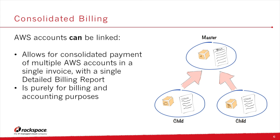RDS Reserved DB Instances function similarly to EC2 RIs and are worth leveraging. AWS credits placed on linked child accounts get used to offset the consolidated bill — if you have credits in accounts B and C but not in master account A, those credits offset the bill in account A. If an account is unlinked, remaining credits go with it. Finally, AWS support charges are calculated on an account-by-account basis, so you must subscribe to AWS support for each account independently.